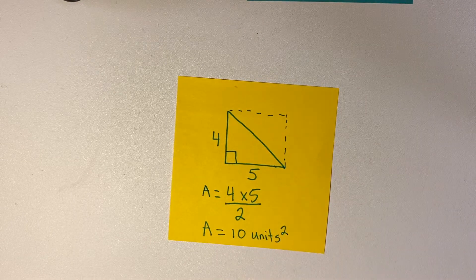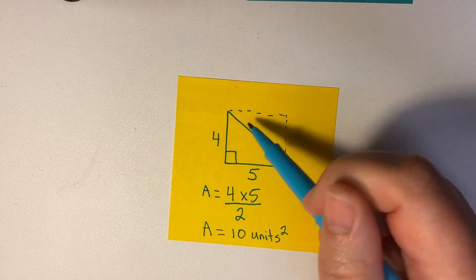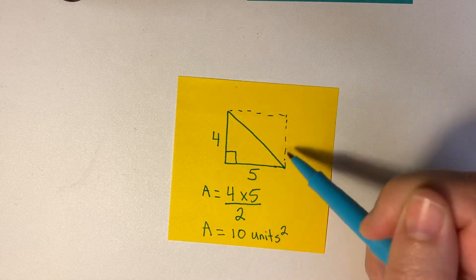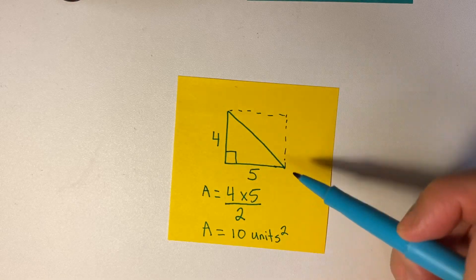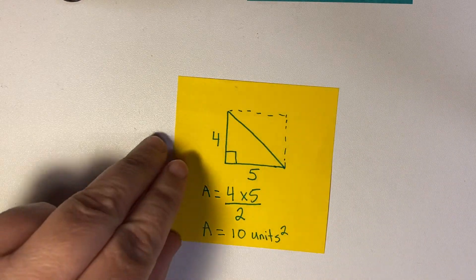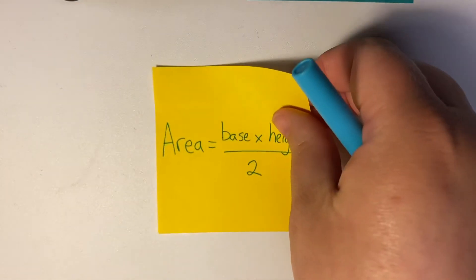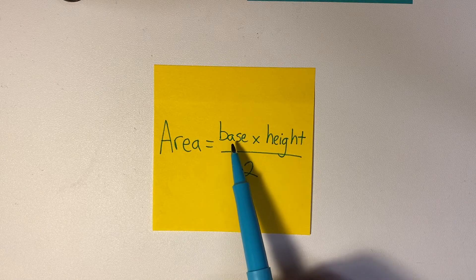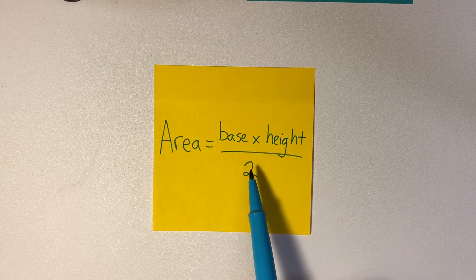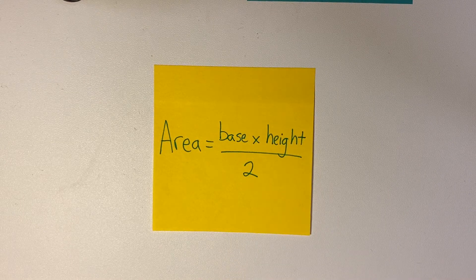And remember that these are going to be units squared because we're talking about area. We're talking about these little square units that could fit in here. We're not talking about the length—this is one dimension, area is two dimensions. Okay, so let's remind ourselves a little bit. Here's our formula for the area of a triangle: it's the base times the height divided by two.